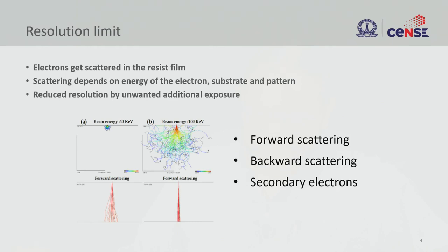Resolution is an important question in all lithography. When the electron gets into the resist, it normally gets scattered — that is primarily the starting process. Once it achieves a certain energy, it reacts with the polymer layer and induces chemical change. The scattering depends on the energy of the electron, the substrate, and the pattern itself. This scattering can be characterized by simulation.